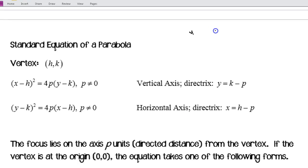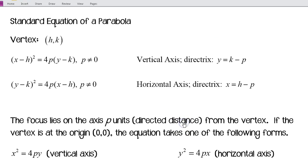The standard equation of our parabola has our vertex at (h, k), and then we have these two different forms: one for a vertical axis and one for a horizontal axis. This vertical axis is what you're used to from algebra.